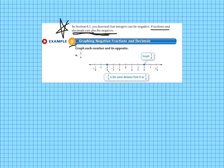So it says graph each number and its opposite. The number that they're giving us to graph is 3 fourths. So we've stretched out our number line here so that we can see the fractions in between 0 and 1. So we have 1 fourth, 1 half and 3 fourths. So we put a dot at 3 fourths. And then the opposite of 3 fourths is negative 3 fourths. So we put a dot at negative 3 fourths.